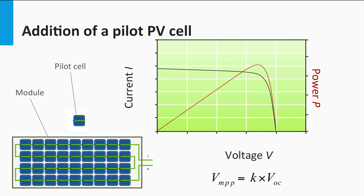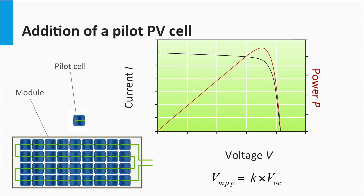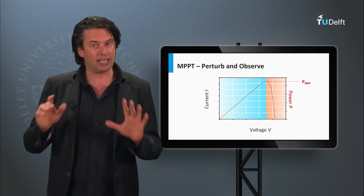Thus, while the pilot PV cell provides a good estimate of the module's open-circuit voltage, the MPP voltage can be calculated as: MPP voltage = K × open-circuit voltage, and the PV voltage can be adjusted accordingly without having to disconnect the PV module. Note that the inclusion of the pilot PV cell merely avoids the losses due to module disconnection; this method would still suffer from the problem of depending on the K value for estimating the MPP voltage.